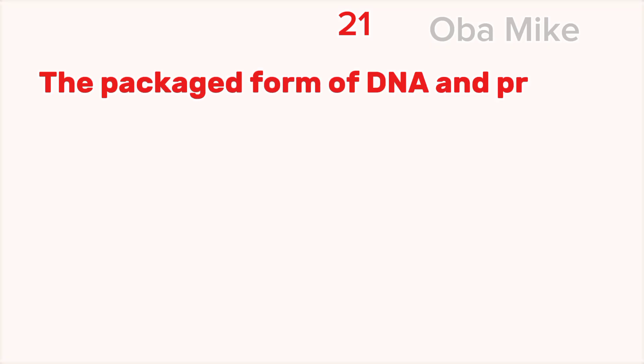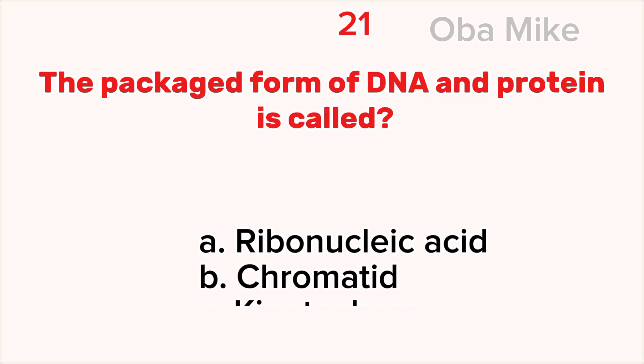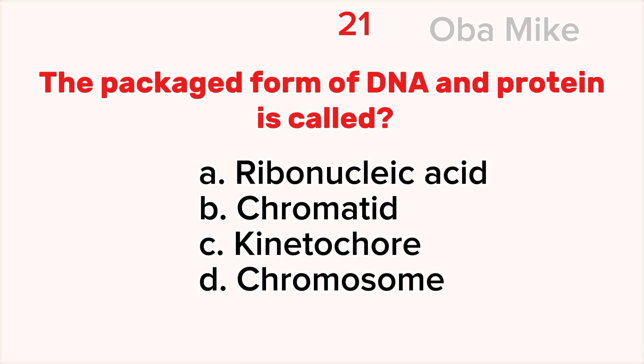21. The packaged form of DNA and protein is called A. Ribonucleic acid, B. Chromatid, C. Kinetochore, D. Chromosome.